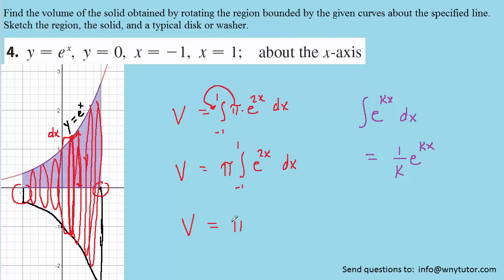So we would have, following this rule, we're going to have pi multiplied. Now, our k in this case is a 2. So we're going to have 1 over 2, e to the 2x. And we'll be integrating that from negative 1 to positive 1.